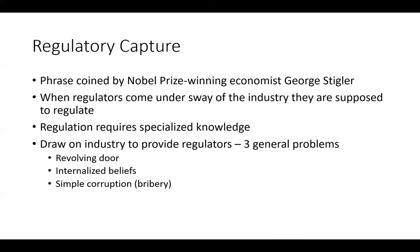The last issue is simple corruption — which in the United States doesn't exist anywhere near the scale seen in many other countries. So the first two — the revolving door and internalized beliefs — are really the problems we see in the U.S.